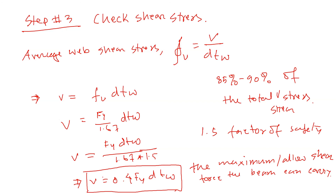So in summary, beam design involves three checks: first, check the bending stress to choose an appropriate beam; second, check the deflection; and third, check the shear stress.